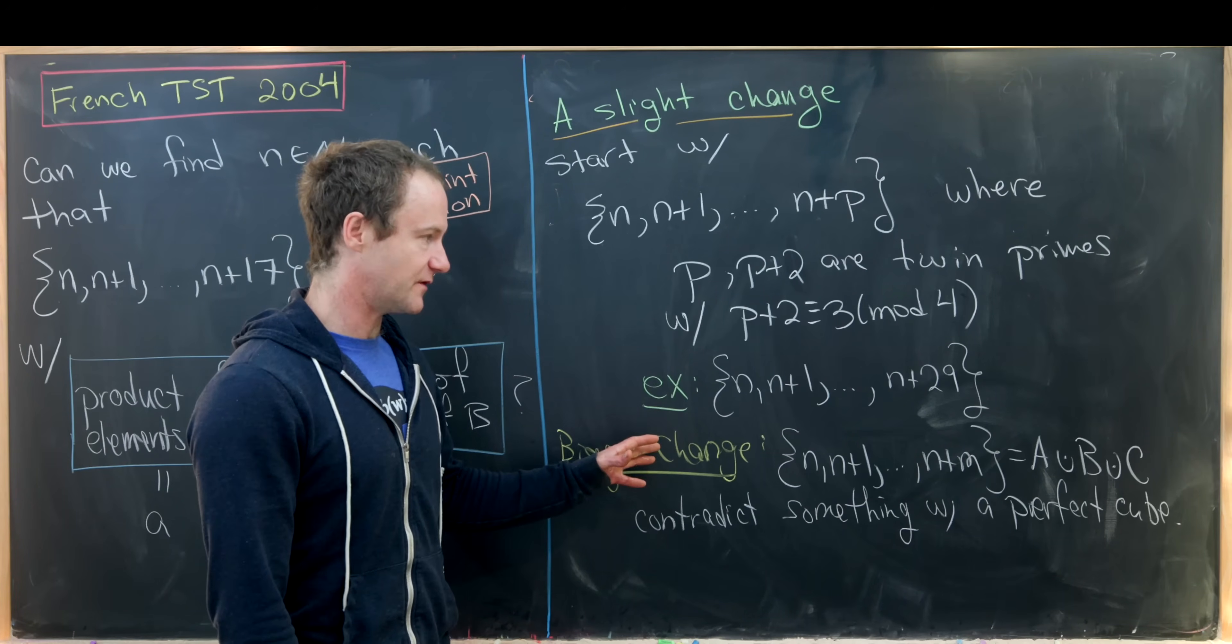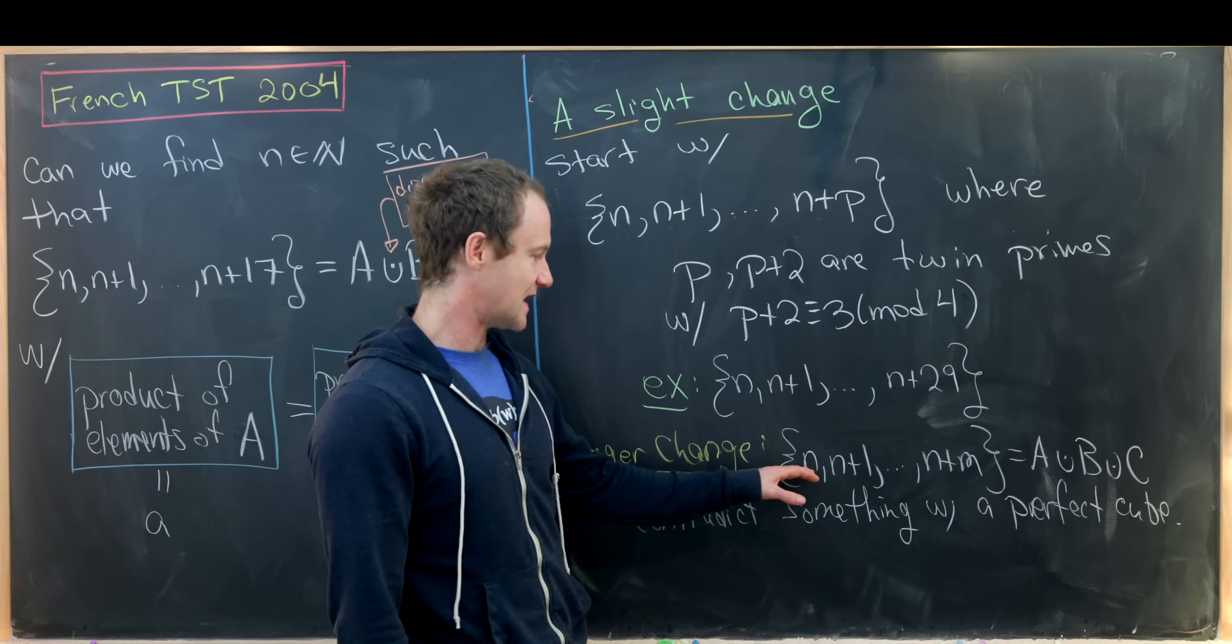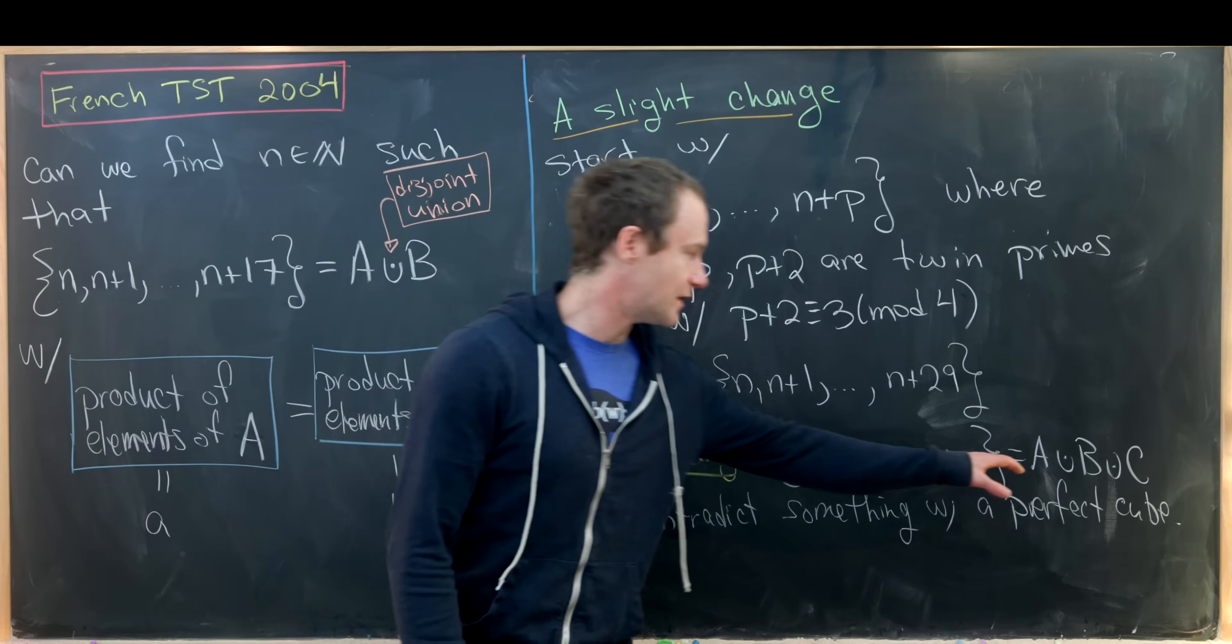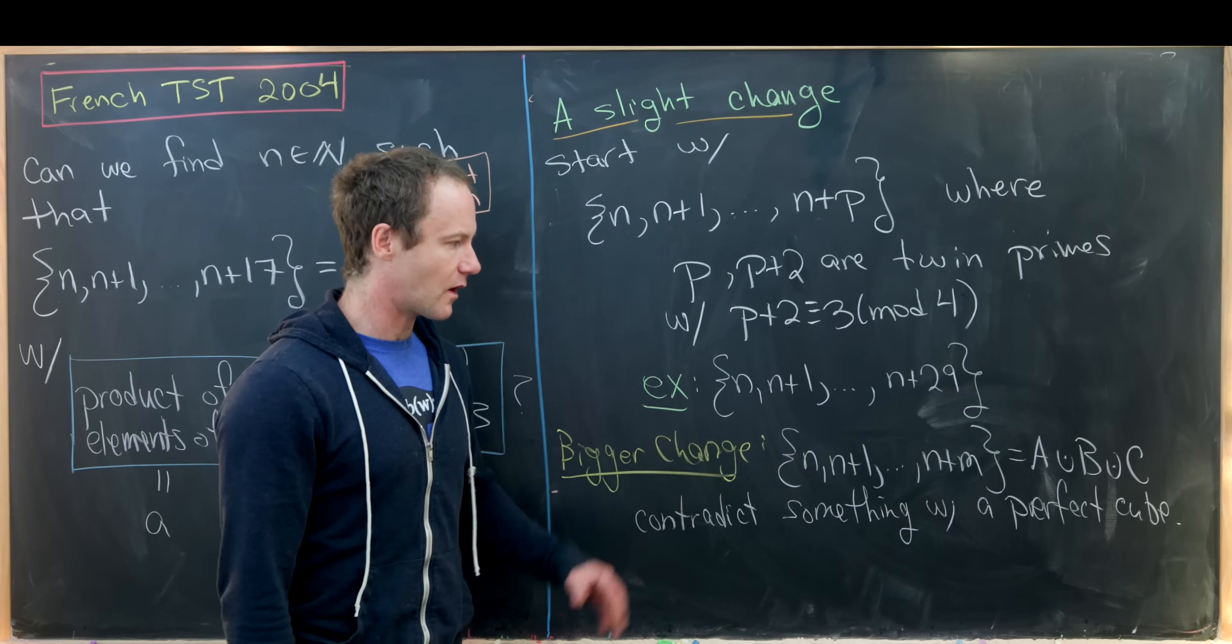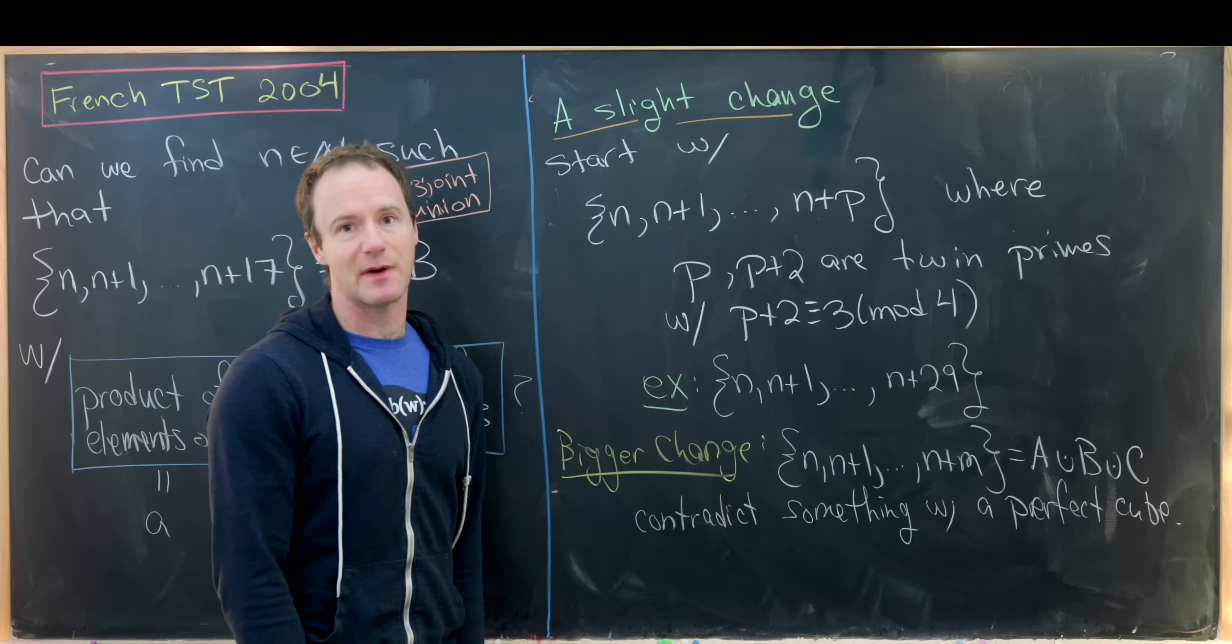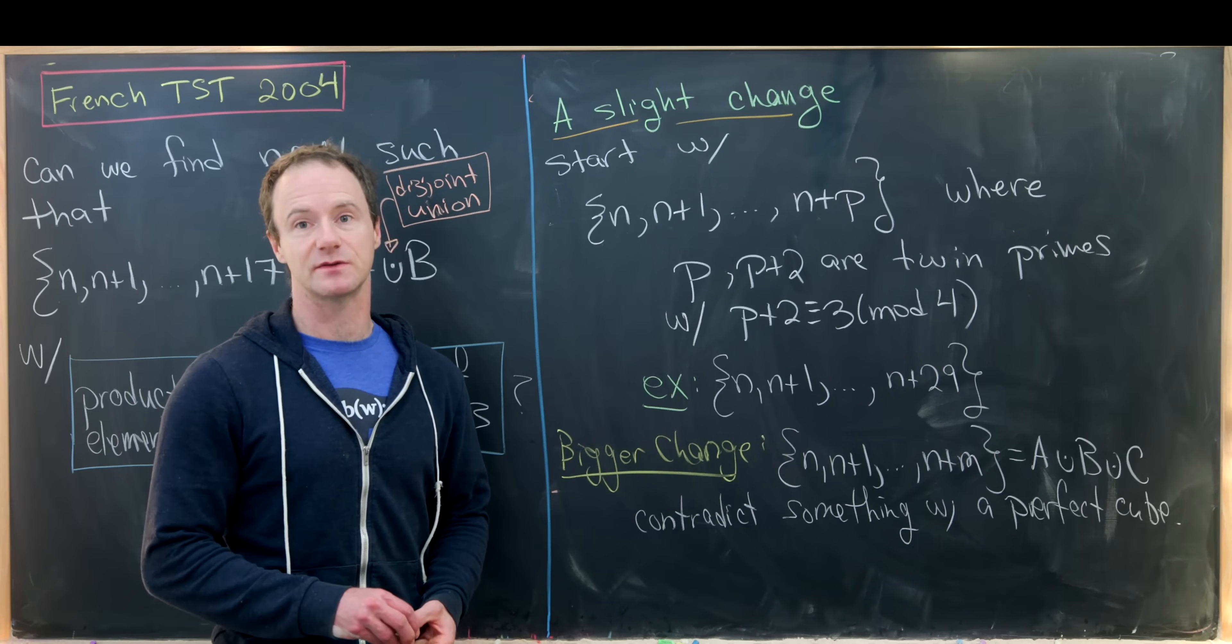Now here's a little bit bigger of a change, although you could maybe change this one a bit more. But here's a bigger change, which is trickier. And that is to have a set {n, n+1, all the way up to n+m}. You'd have to tweak that number m, where it decomposes into the disjoint union of three sets. And somehow along the way, you contradict something being allowed to be a perfect cube or not. So I'll let you guys think about this one a little bit more. Maybe post in the comments if you come up with anything based off of this proposed change. And that's a good place to stop.